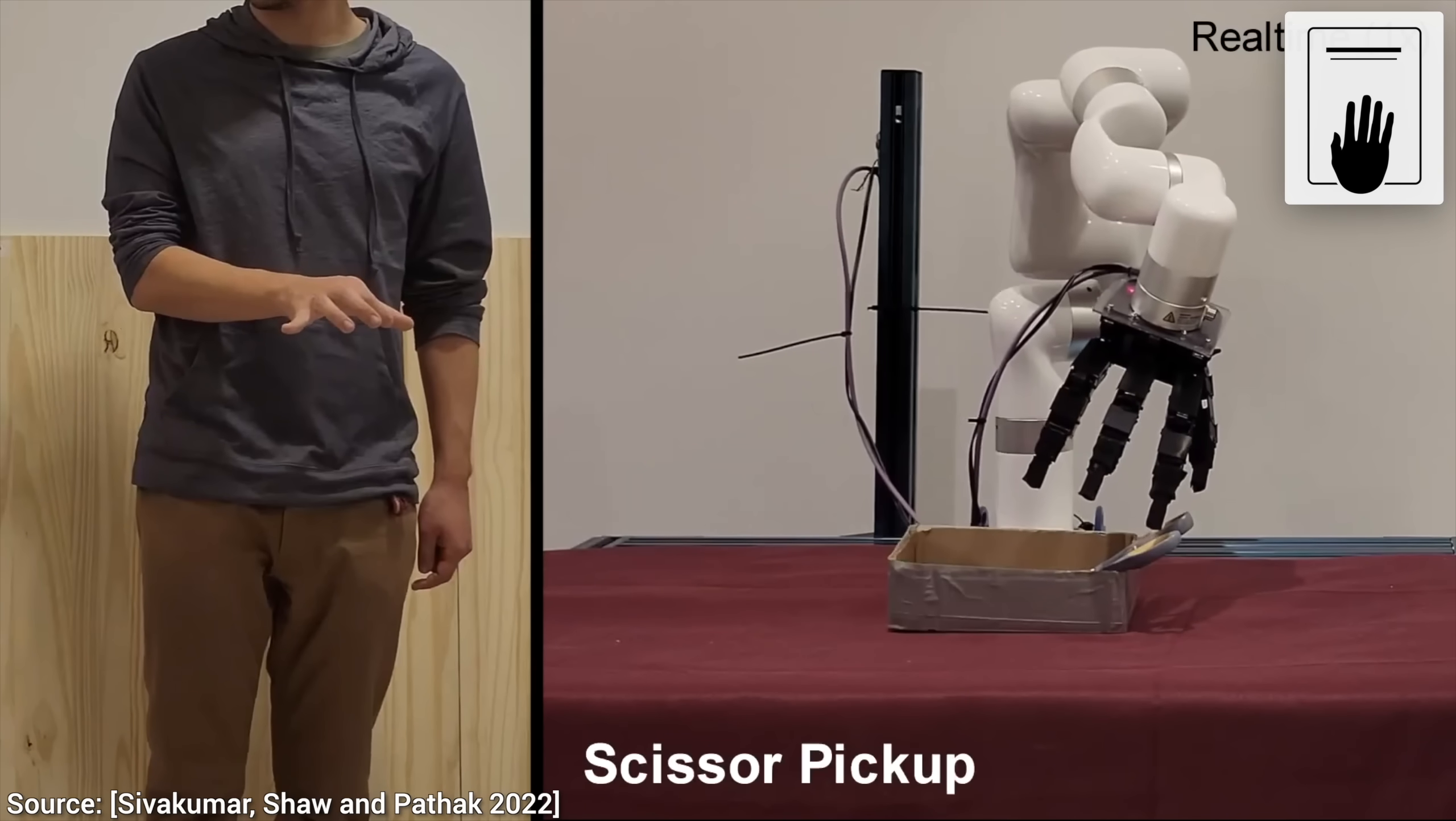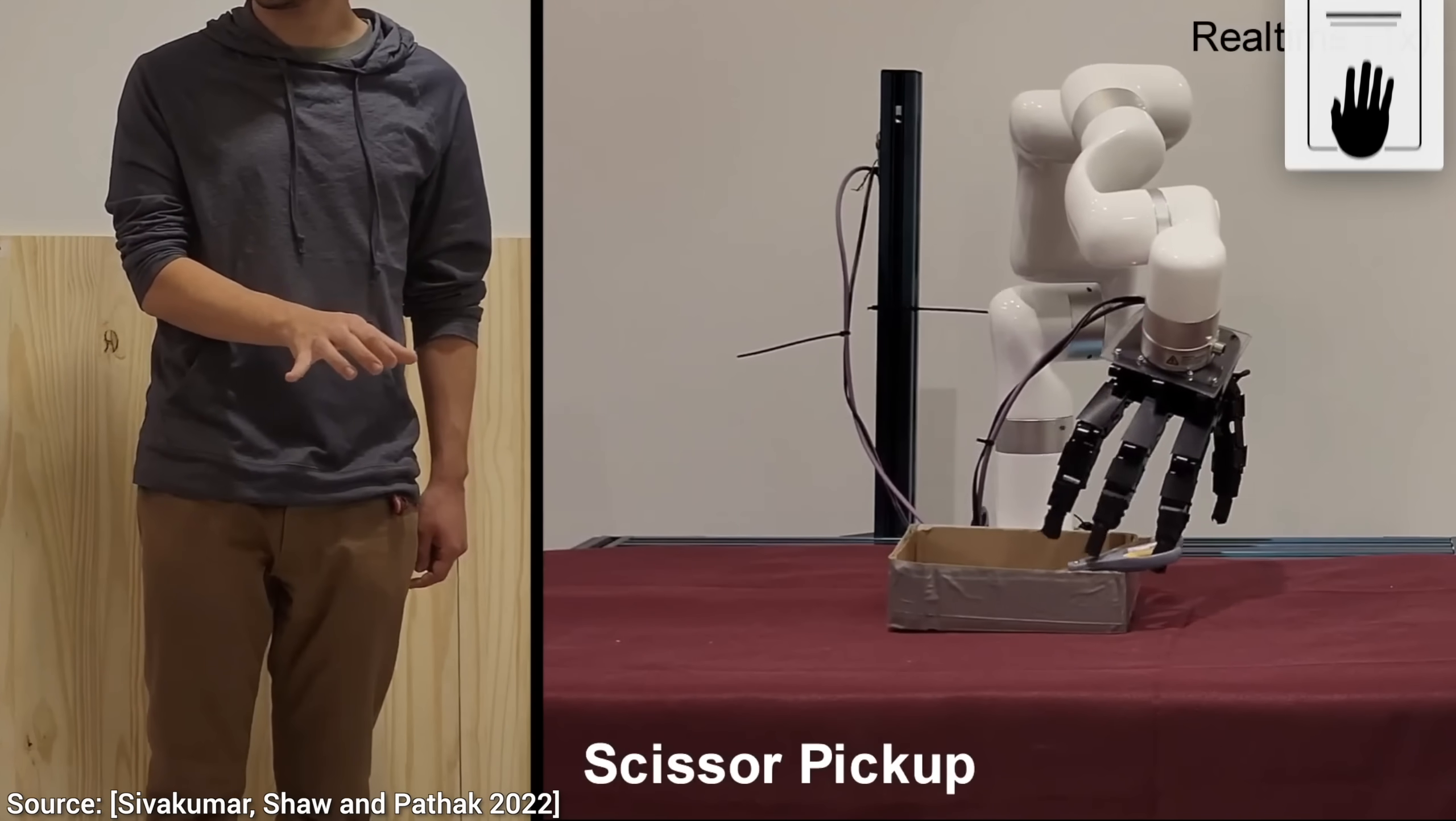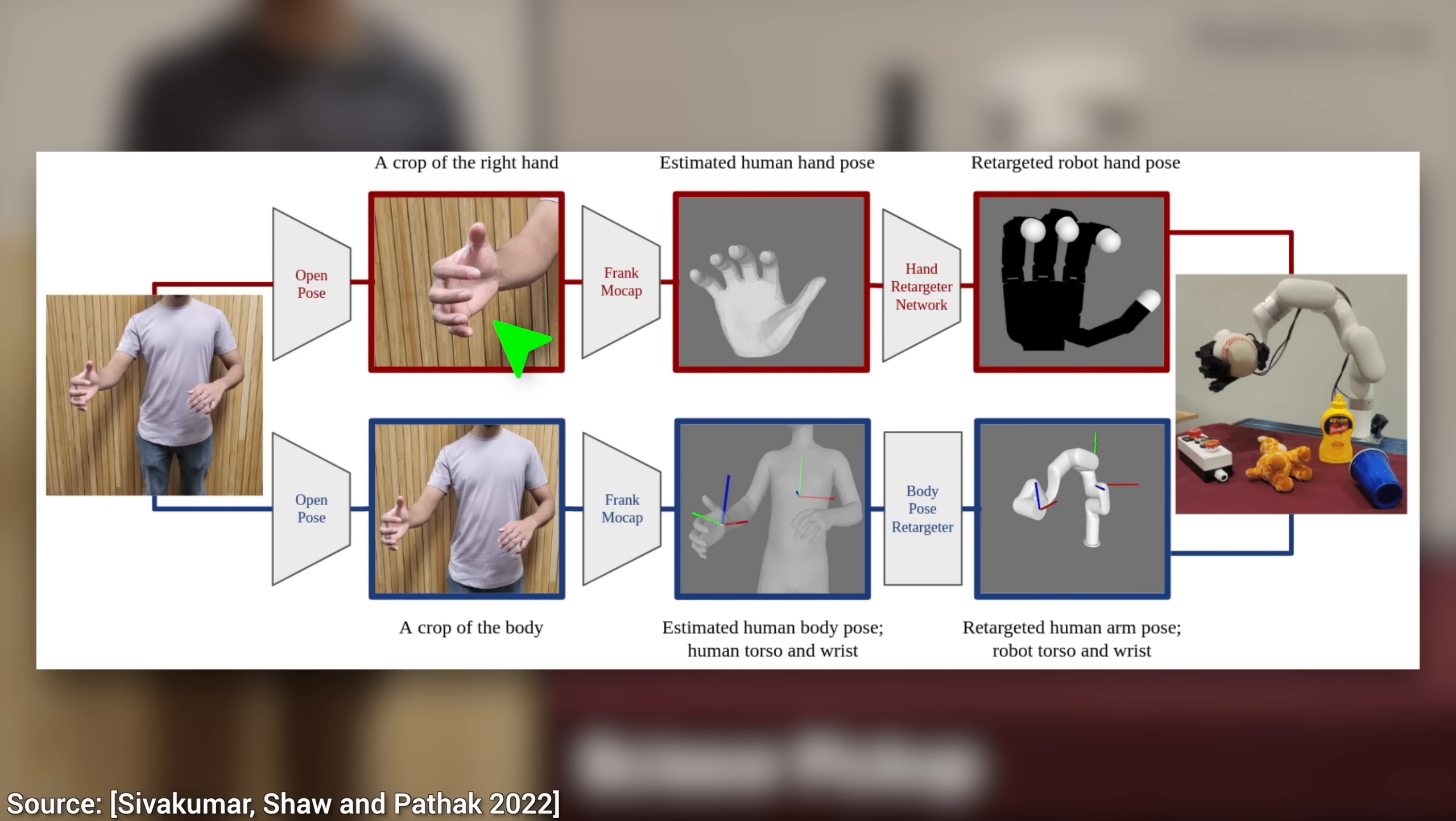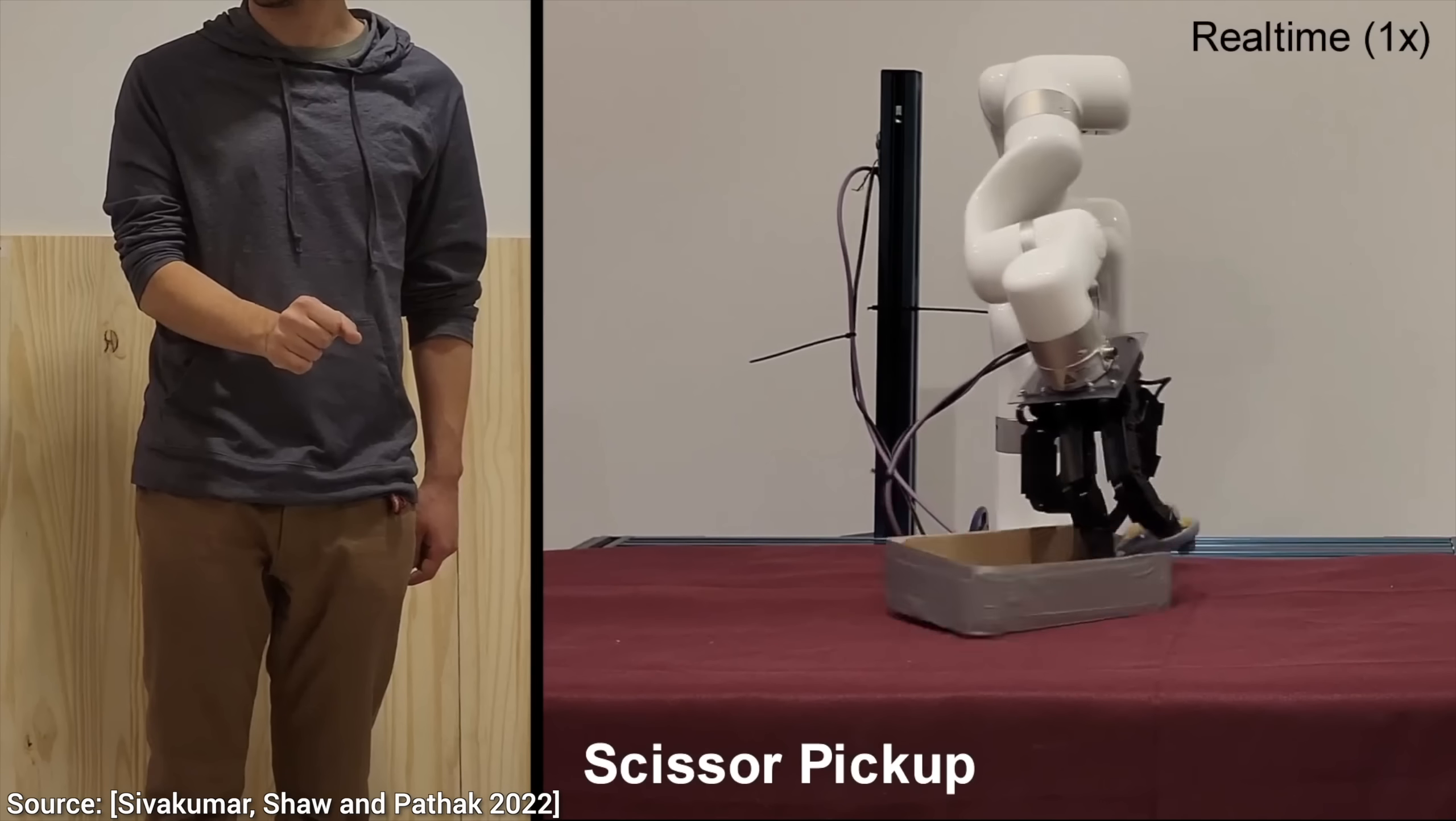because we don't need to buy anything crazy at all. What we need is just one uncalibrated color camera. Today, this is available in almost every single household. How cool is that?